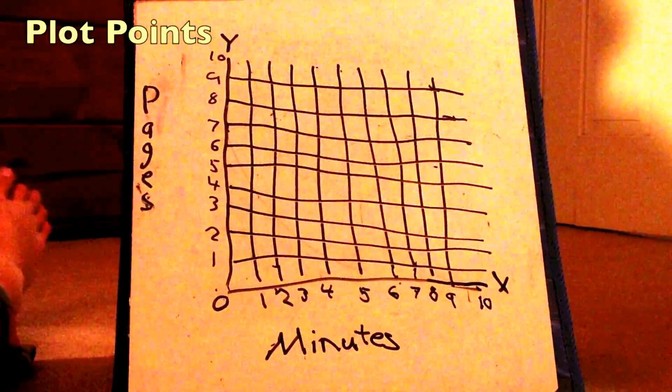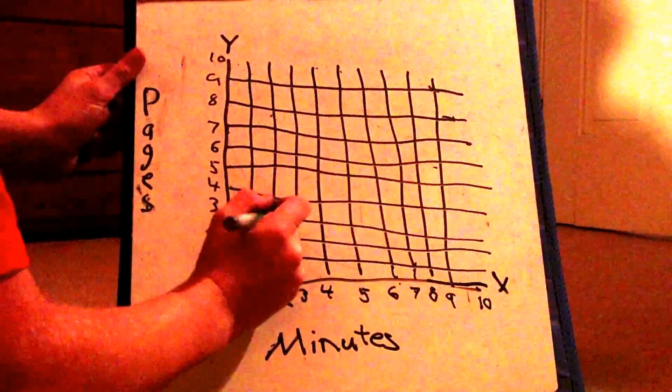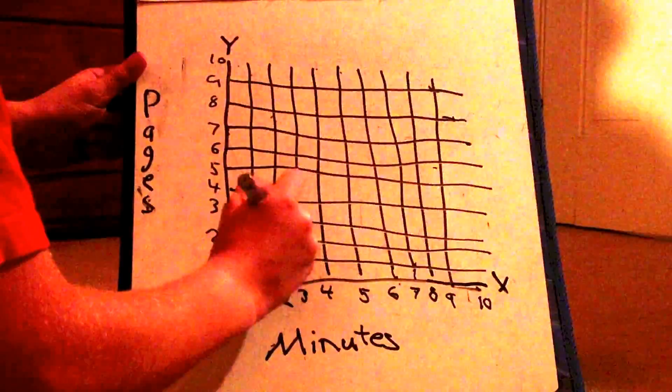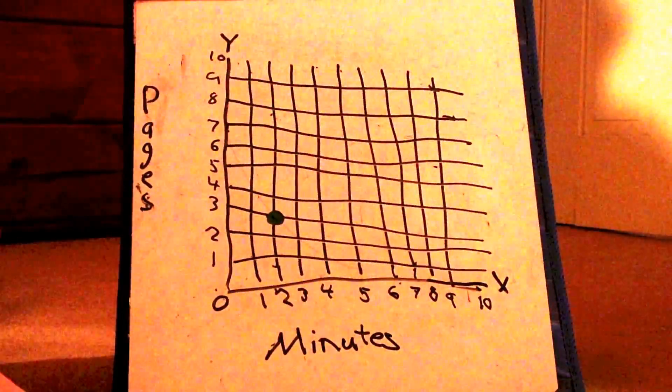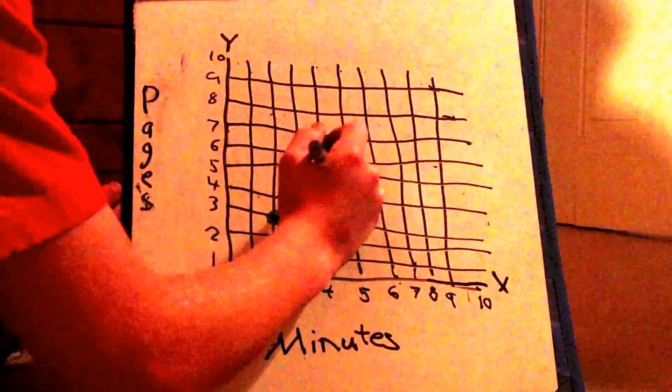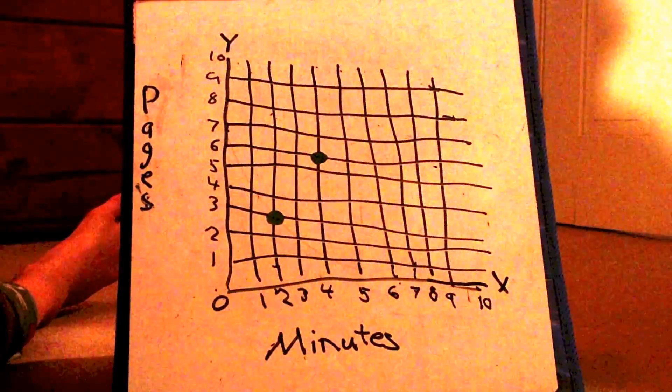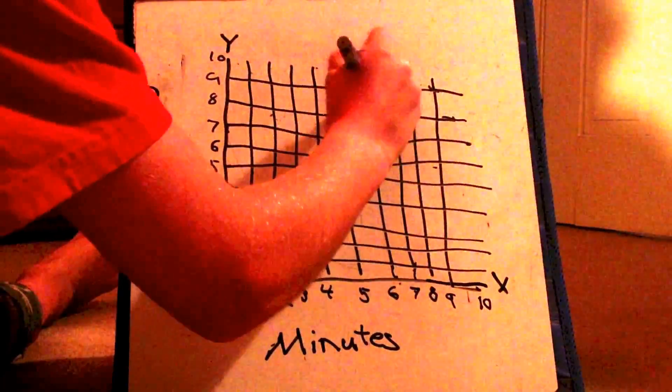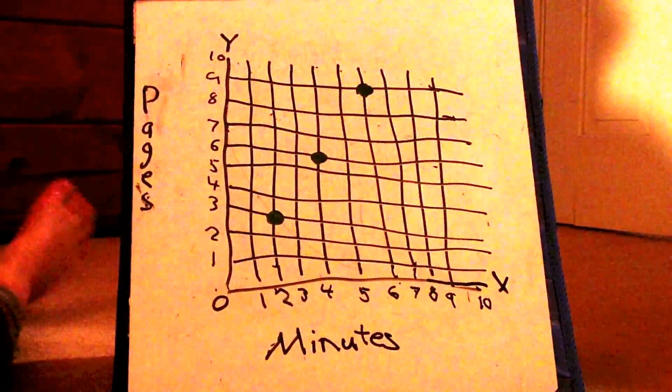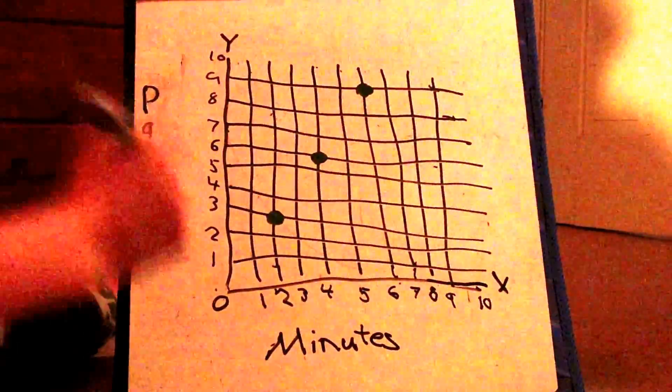Our first piece of data was 2 minutes for every 3 pages, so I plotted that there. 2 across and 3 up. Our next piece of data was 4 minutes for every 6 pages. And after that, we had 6 minutes for every 9 pages. So here I plotted them.